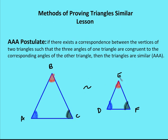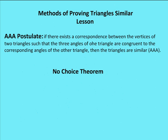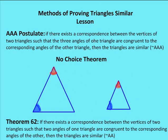Now if we think back to several chapters ago — I think it was one or two — where we learned that if we have two angles of two triangles that are congruent, then we know the third also has to be congruent. We understood that by the no choice theorem. So the no choice theorem is going to make the AAA postulate somewhat irrelevant, because now really all we need to have is just two angles.